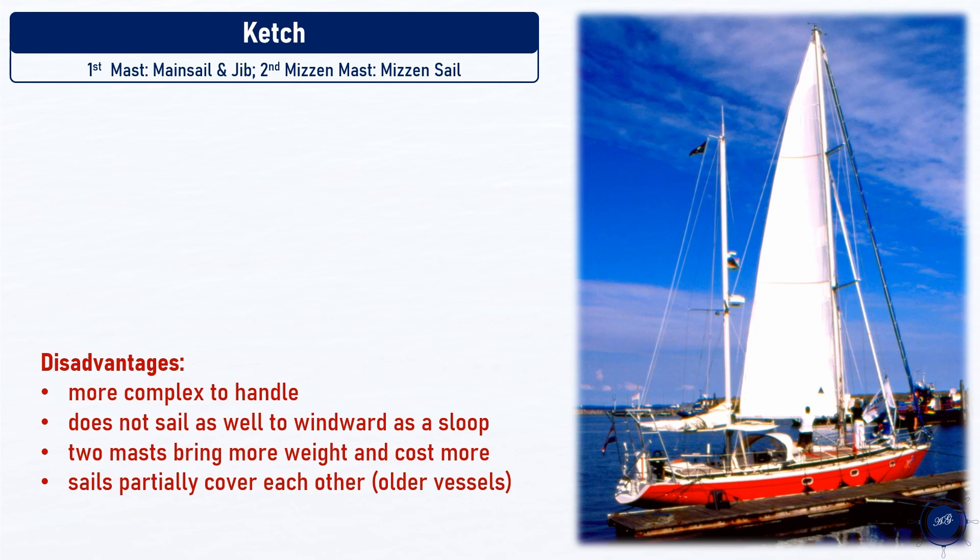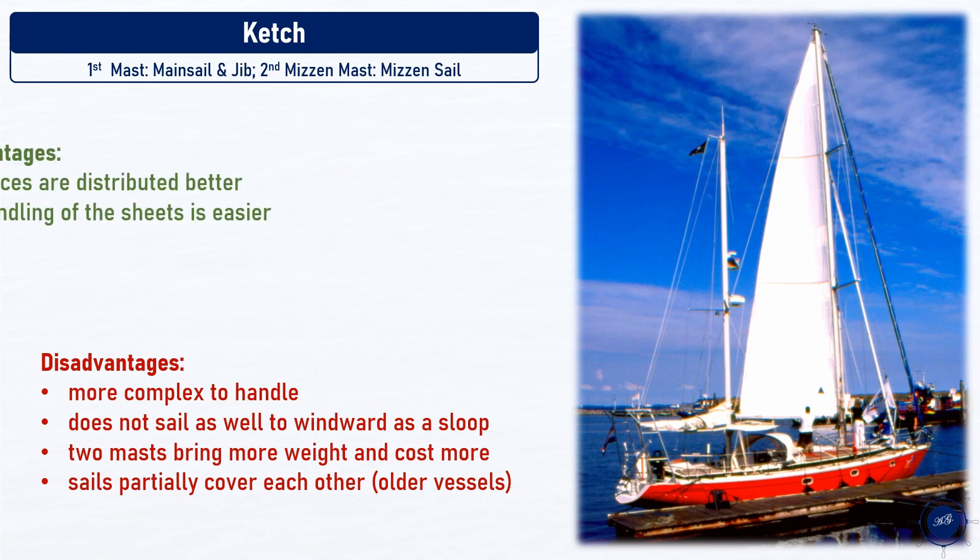Modern ketch-rigged yachts have partially remedied these disadvantages. The two masts are almost the same size and are further apart than on older designs, so the sails affect each other little. By dividing a large headsail into two smaller headsails, the forces are distributed and the handling of the sheets is made easier — that is often the argument of owners who buy a ketch.